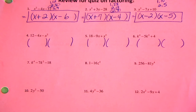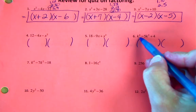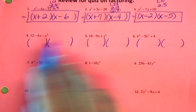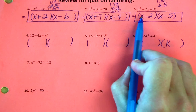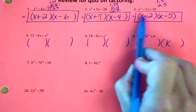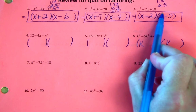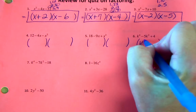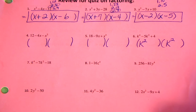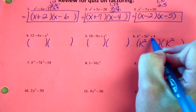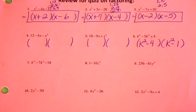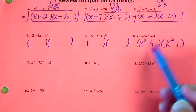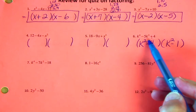Let's do number 6 first because it has a k to the fourth, and the variable starts the expression. The k comes first, but just like we did x times x above, when we multiply we add the exponents — 1 plus 1 is 2 — so this is actually going to start k² times k². The signs are the same because it multiplies to a positive; we look to the middle and they're both negative. What multiplies to 4 and adds to 5? That's 4 and 1. Negative 4 times negative 1 is positive 4, and negative 4 plus negative 1 is negative 5.